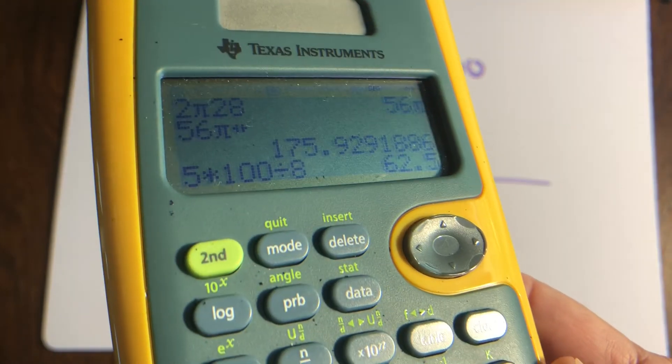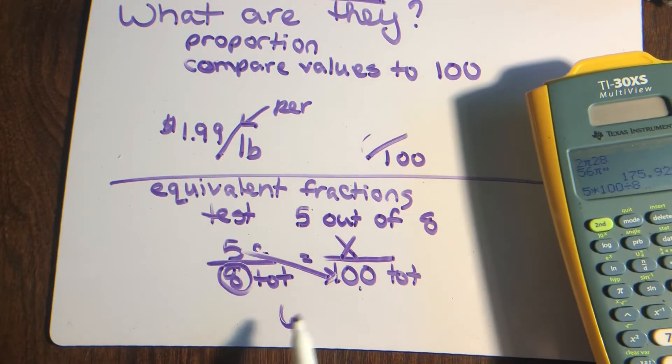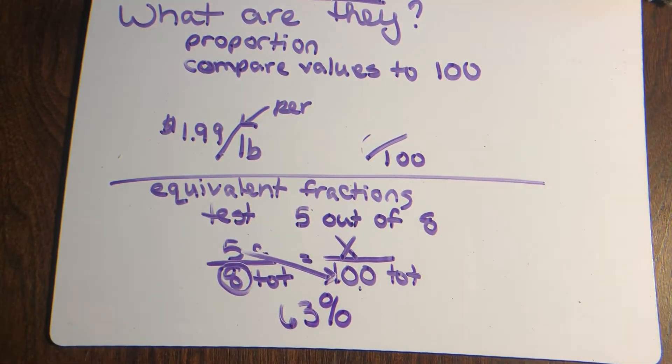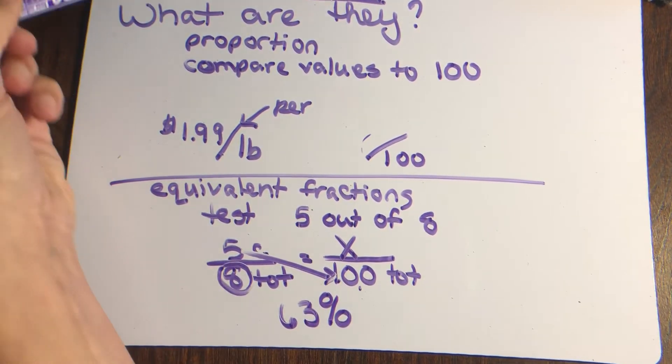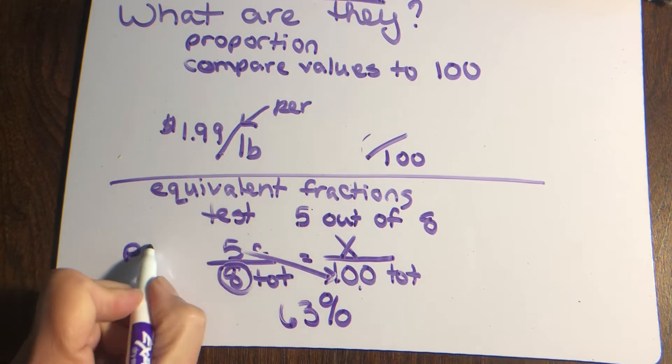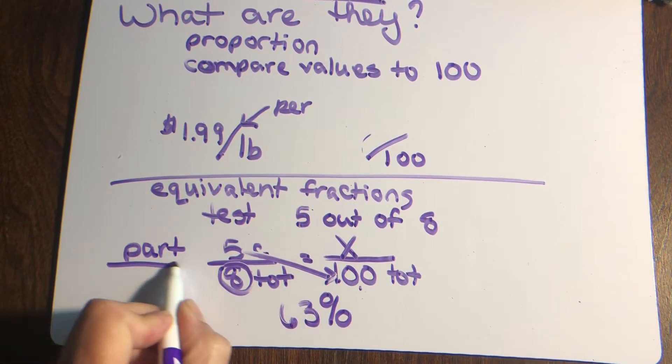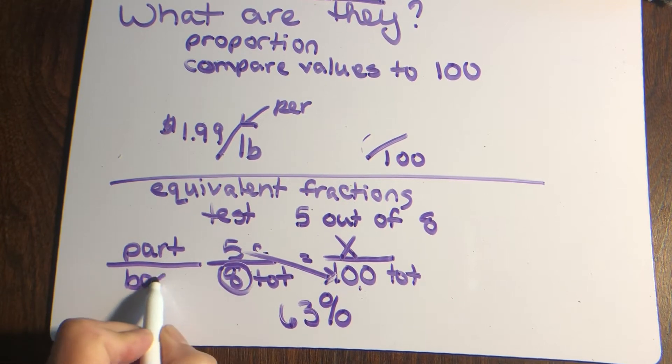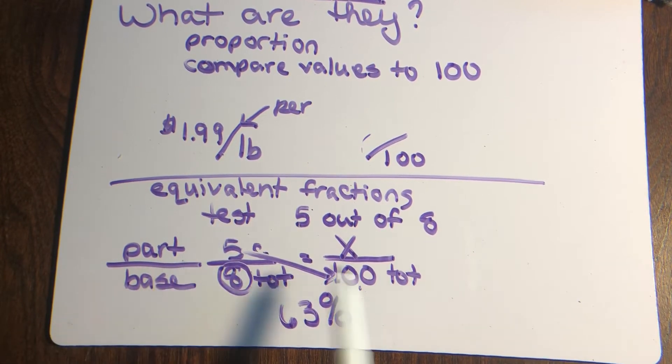If you made five out of eight, even though that sounds pretty good, you merely made a 62.5, which you could have rounded to a 63 percent on your test, which is really not that great.